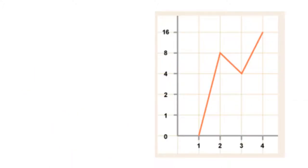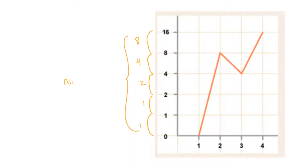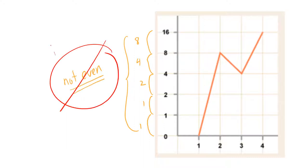Here's another graph with a couple of things wrong. Number one, it has no title and no units, so we don't really know what we're measuring. Besides that, the spacing on the scale is not even - it goes from zero to one, then jumps to two, then to four, then to eight. That uneven spacing is not what you do on a linear graph.